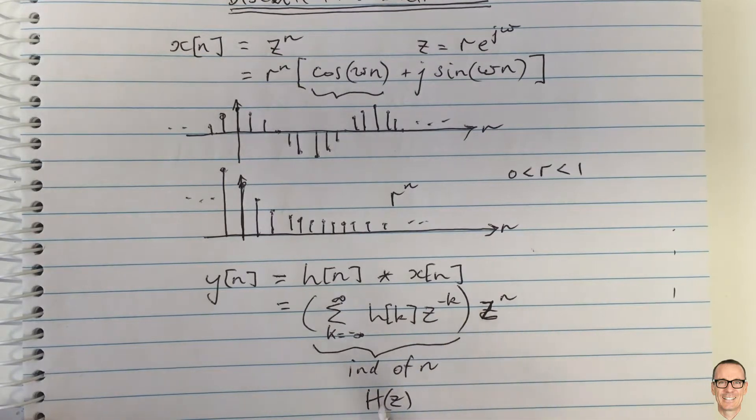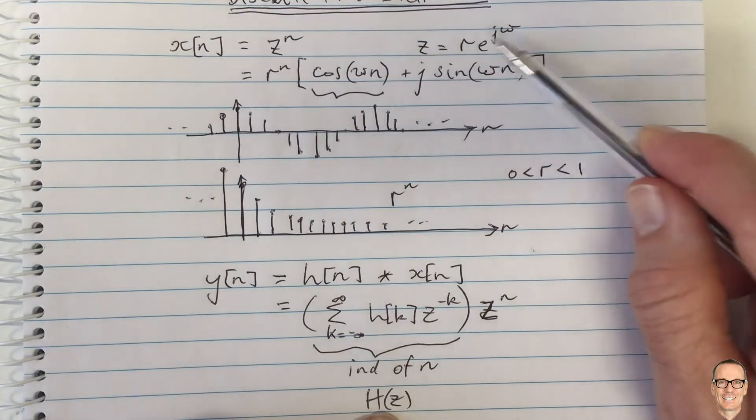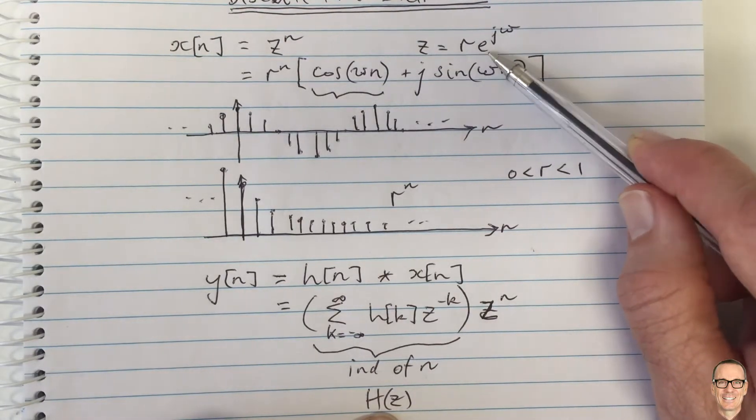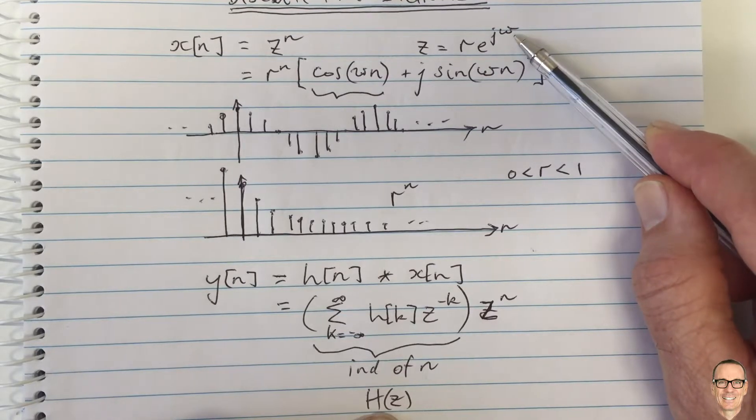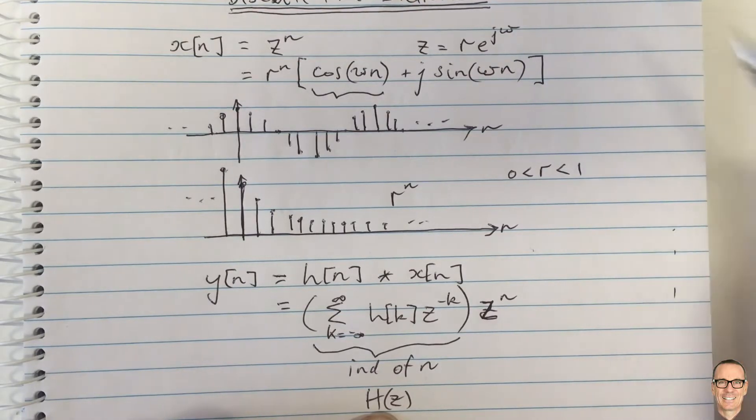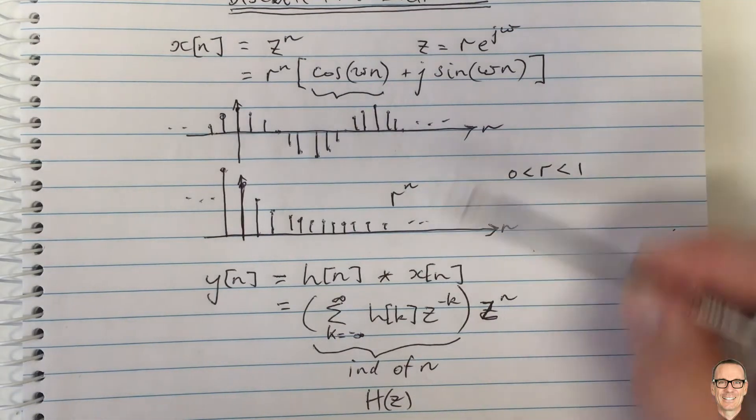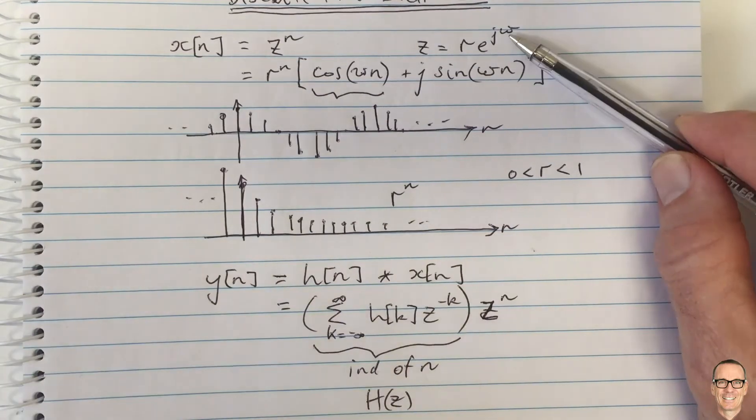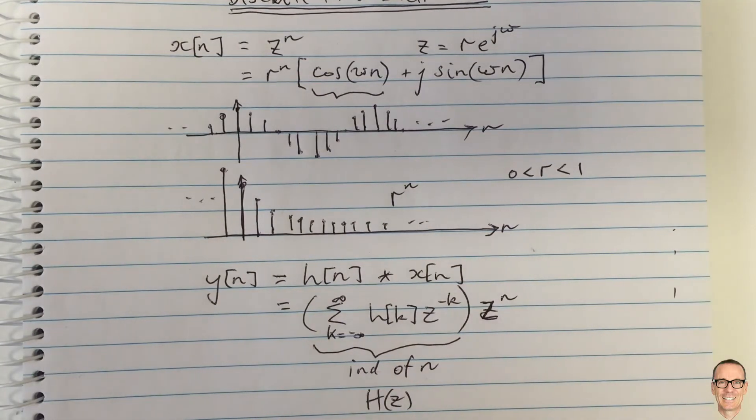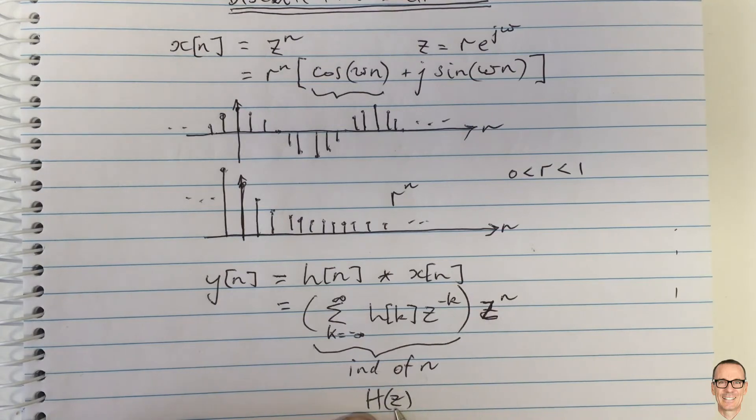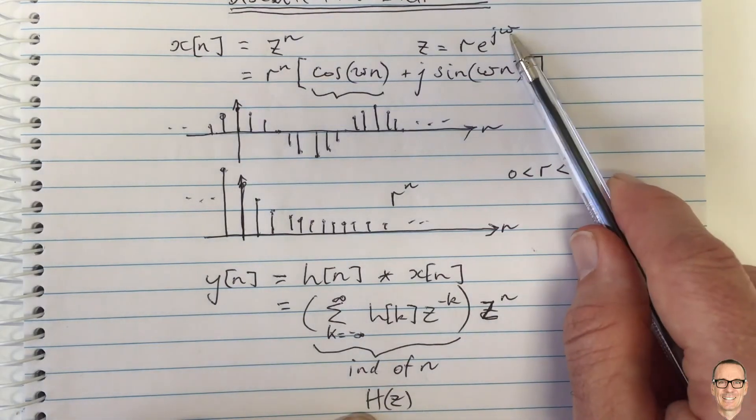of z. Don't forget, z includes e^(jω), so it's a function of frequency. Just like the Laplace transform and Fourier transform, there's a very strong relationship between the two. Just like those in continuous time, in discrete time we have a transform which depends on frequency.